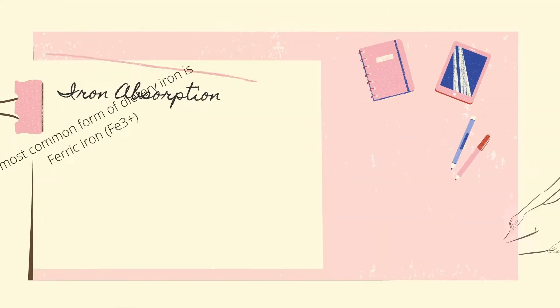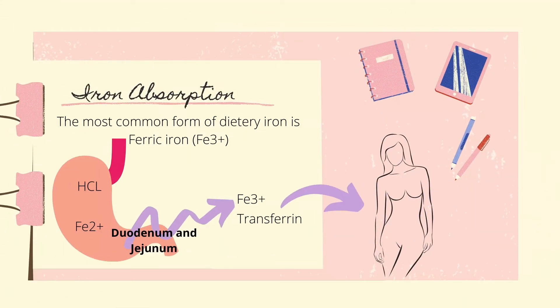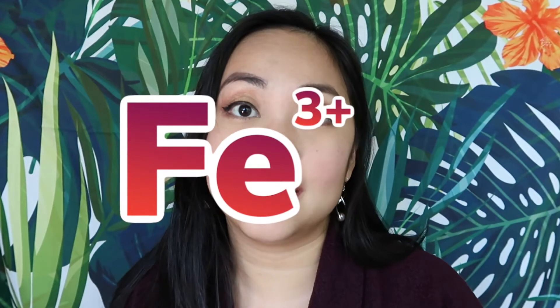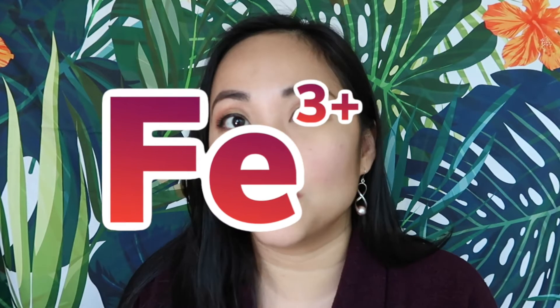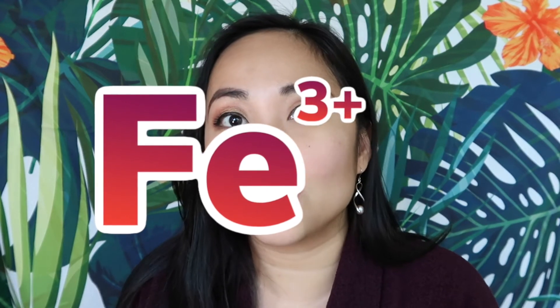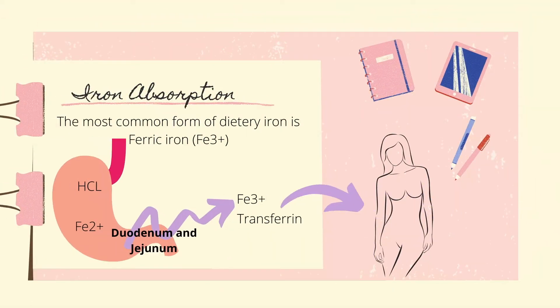Let's start with iron absorption. When we eat our food and there's iron there, the most common form of iron is in its ferric state, which is Fe3+. So let's say we eat steak or something that's rich in iron — it's usually in its ferric state. And then when we eat it, it goes to our stomach where it reacts with hydrochloric acid, or HCl.